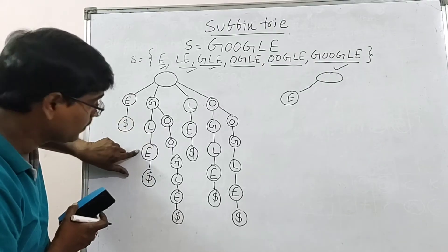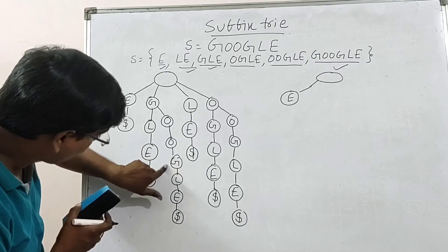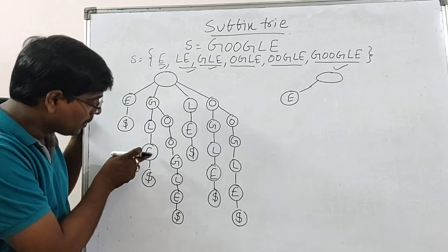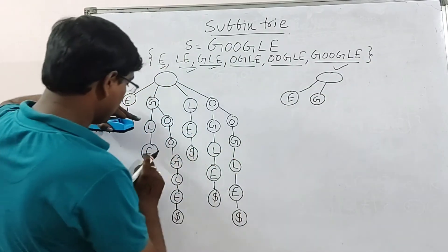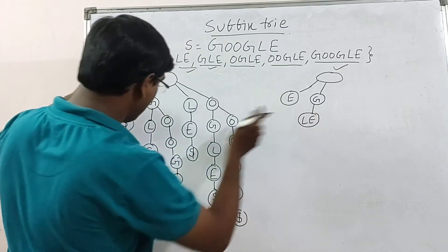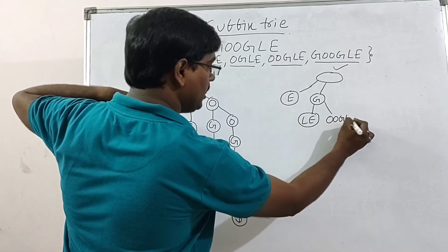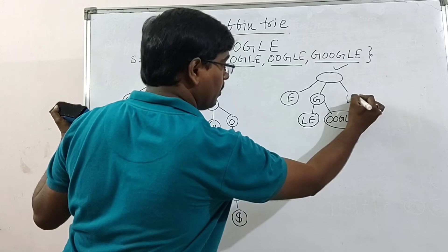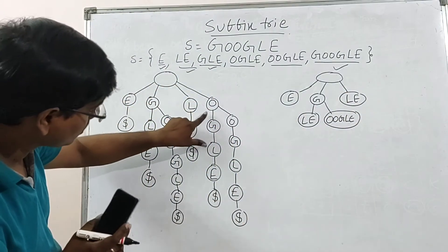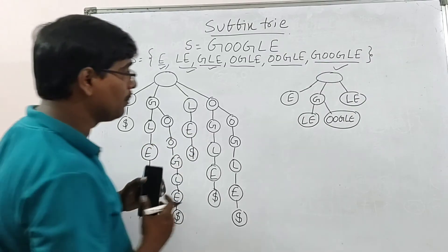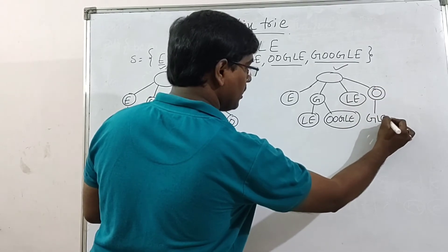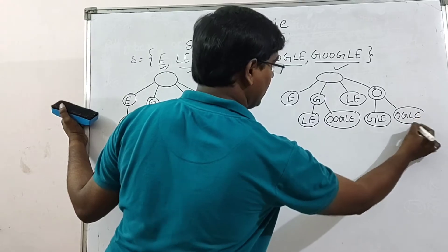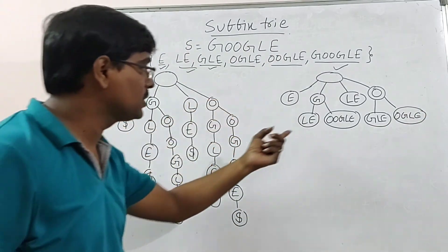Now, you can combine L-E. You can combine L-E. But not combine with G. Compressed trie is E has only one path from L. Then you can combine L-E. So, I am taking this as G. Compress L-E. And compress this O-O-G-L-E. It is possible to combine L-E? Yes. Here also you can compress G-L-E. O-G-L-E. You can compress O-G-L-E.